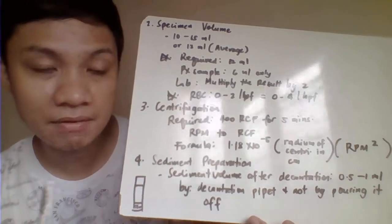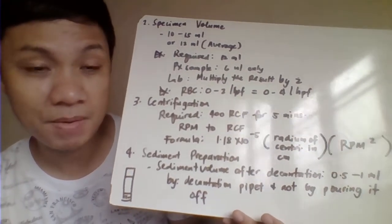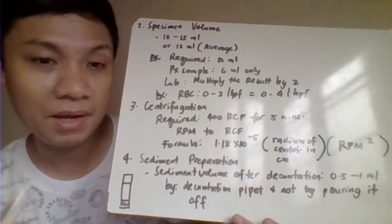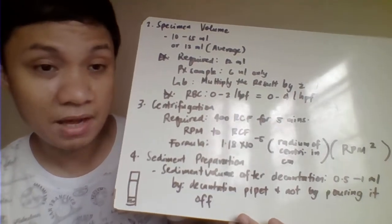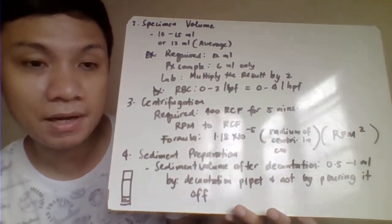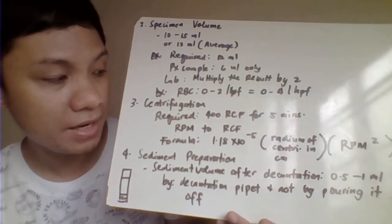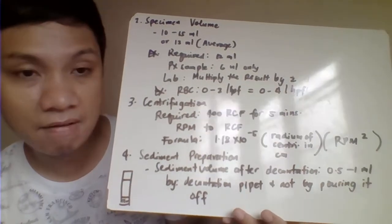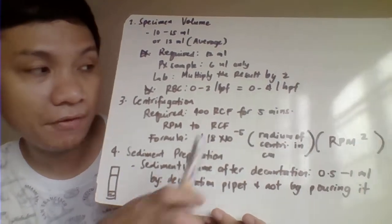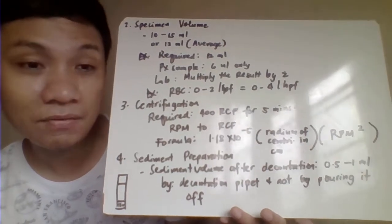For centrifugation, you need to balance the tube with a balancer or another sample. If tubes are not balanced, the centrifuge will be noisy. Make sure specimens are properly labeled when you have many samples to avoid errors. The required centrifugation speed and time is 400 RCF — relative centrifugal force, which is different from RPM (revolution per minute) — for 5 minutes. The centrifuge tube should be capped to prevent aerosol formation or transmission of infectious droplets, and the centrifuge lid should be covered.